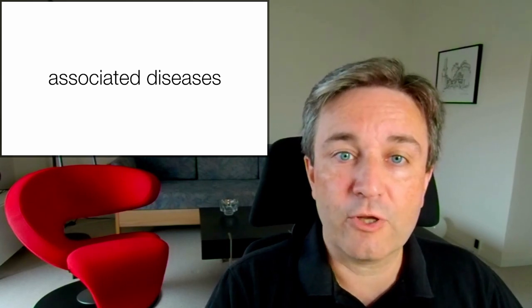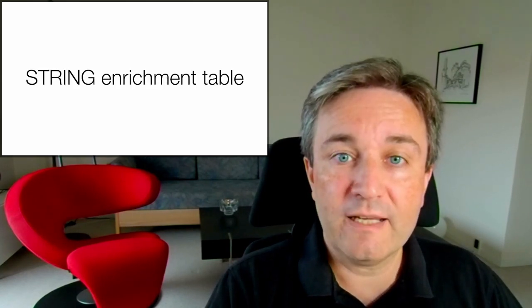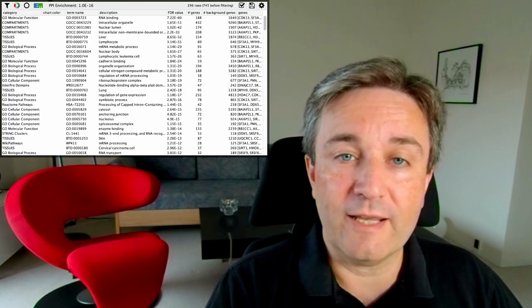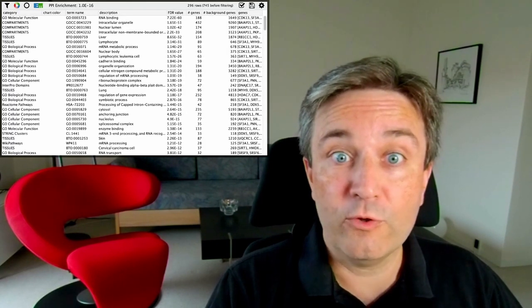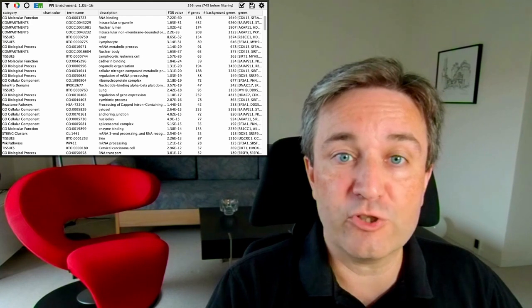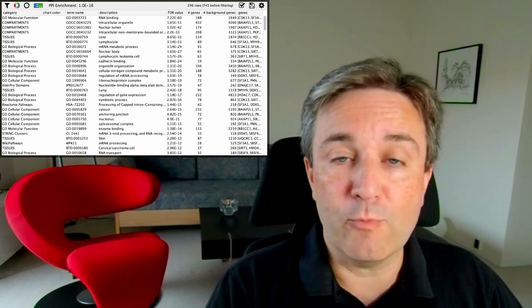All of these enrichment results are then shown in the StringEnrichment table, which looks like this. It shows all the enriched terms together with their false discovery rates, categories, and much more.